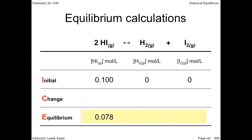If known, the equilibrium concentrations are added to the equilibrium row. The difference in concentrations between the initial and final concentrations are added to the change row. So far, all this table shows is information garnered from the question. Let's start to fill it in. Remember, the question is asking for the equilibrium constant, so our strategy is to find the equilibrium concentrations and apply them to the equilibrium expression.